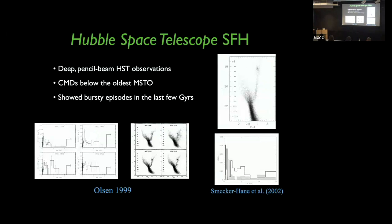The first detailed work on the star formation histories of the Clouds was done with HST observations — very deep pencil-beam observations with CMDs reaching below the oldest main-sequence turnoff. Work by Dolphin, Smecker-Hane, and others got early SFH results, and we already saw that the star formation history was very bursty, especially in the last few gigayears.